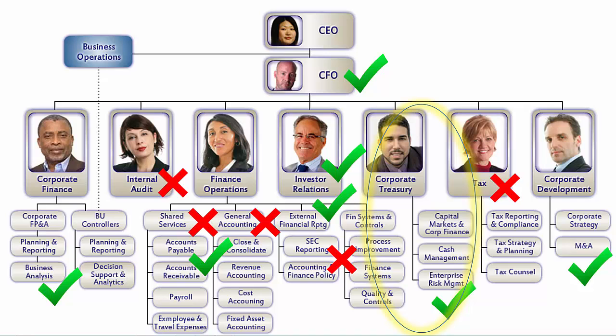Also included here, though it could be its own function, is enterprise risk management. Risk managers consider all sorts of risks confronting the organization — anything from disaster recovery to health and safety to fraud to some of the financial risks. We looked at the ways that finance identifies and mitigates those risks in our last lesson.